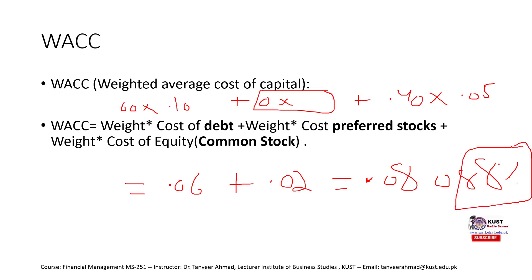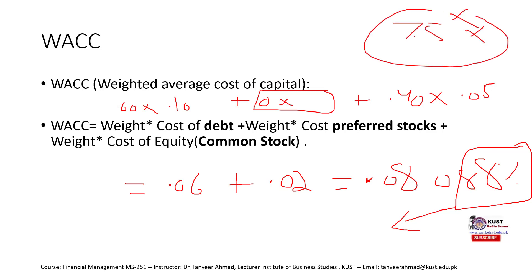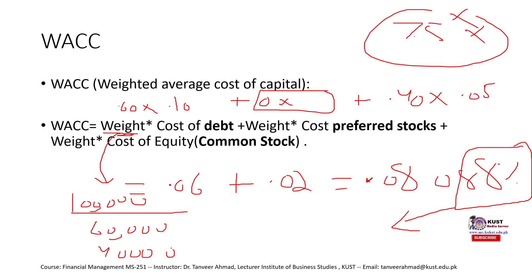Our weighted average cost of capital is 8%. Remember, if we take the simple average it turns out to be 7.5%, which is wrong. The actual cost we are bearing on this 1 lakh rupees — on acquiring this 1 lakh rupees — is 8%. This is our cost of capital. We can find the weight easily: if we need 1 lakh rupees and we know 60,000 is coming from debt and 40,000 from equity, we simply divide 60,000 by the total amount to get a weight of 60% or 0.6. So we know how to find the weights.